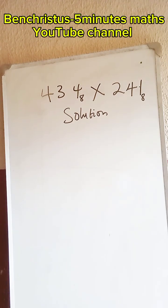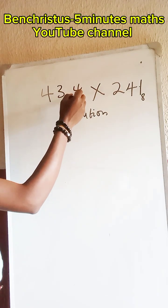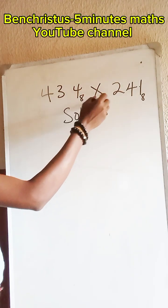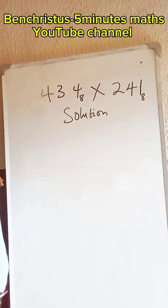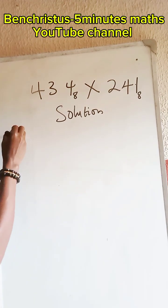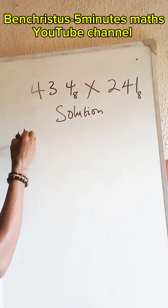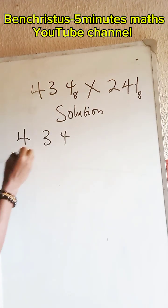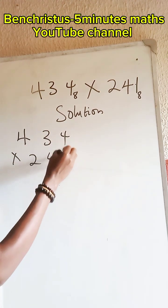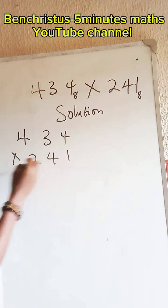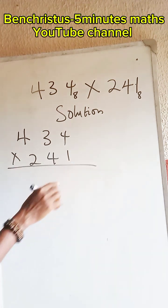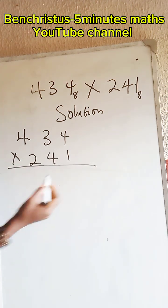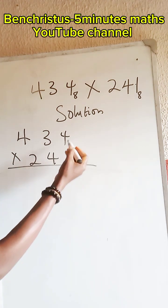This is a five-minute class. We have 434 multiplied by 241, all in base 8. We are adding to the problem — we arrange it in order: 434 multiplied by 241, all in base 8. We omit the base-8 notation from here on.